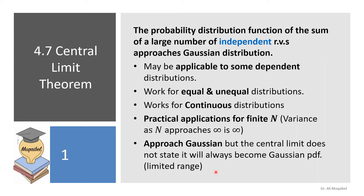Note that the Central Limit Theorem does not say the distribution is going to equal Gaussian — it says it approaches Gaussian. So the CLT does not state it will be exactly Gaussian; it's in the limit, approaching Gaussian. There are lots of handy applications for this, and it makes things simple. This is why Gaussian is a very widely used distribution.